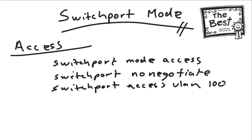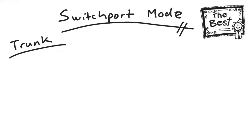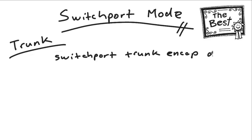That is the best practice configuration for an access port. Now let's look at a trunk port. The first thing you need to worry about with a trunk best practice configuration on some devices is you have to set the encapsulation — switchport trunk encapsulation dot1q. This is only required on devices that still support ISL encapsulation, and those devices are getting fewer and fewer — they're going the way of the dodo bird.